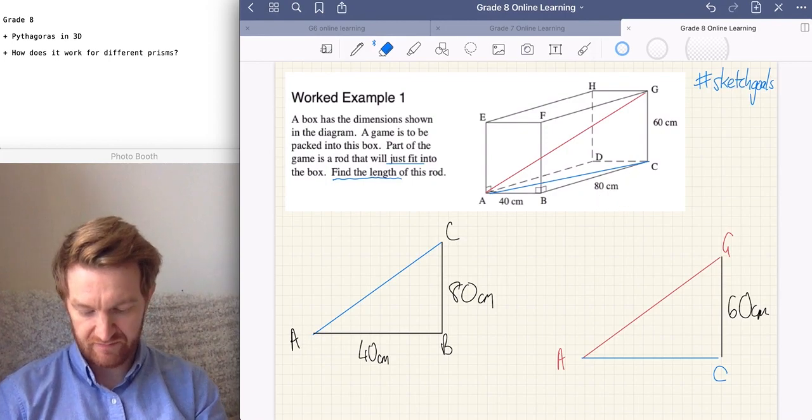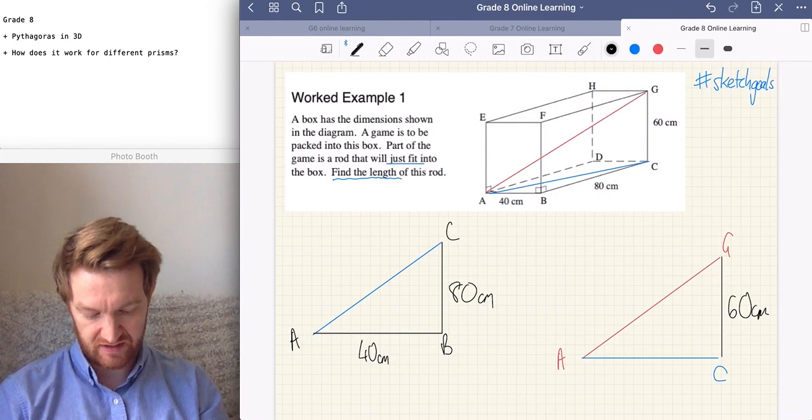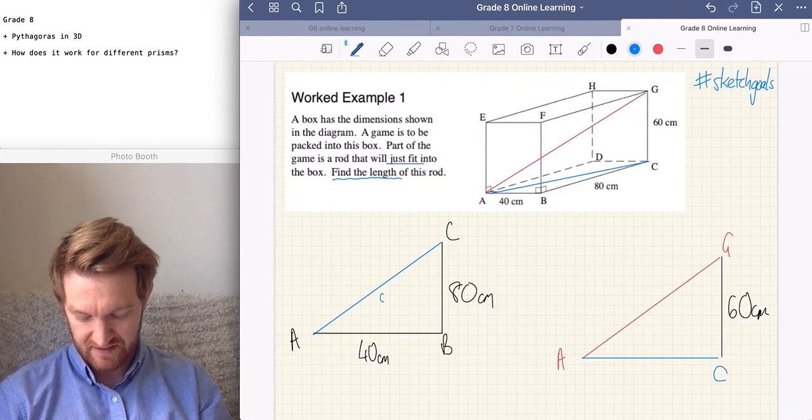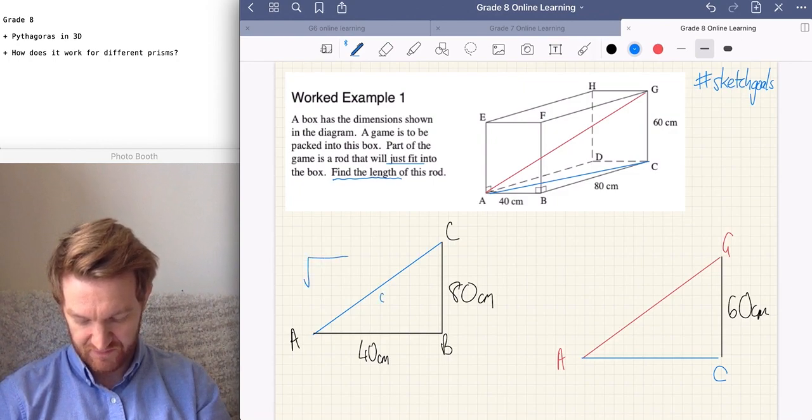Using our formula from last lesson, we know that to find the longest side, we can say, well, this longest side, C, is going to be the square root of 80 and 40 squared.